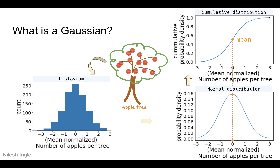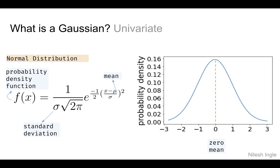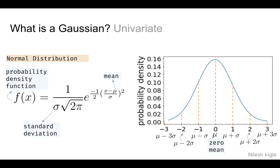Formally, the Gaussian distribution is represented by f(x) = 1 / (σ√(2π)) times the exponential term, where μ is the mean and σ is the standard deviation. In the univariate case — just one variable such as the number of apples on a tree — we can represent this as shown in the plot. The center is the mean, and the orange dotted lines on the left and right represent how many standard deviations away from the mean each region is.